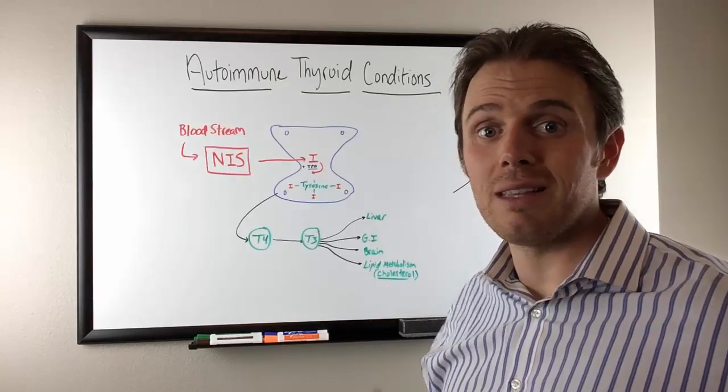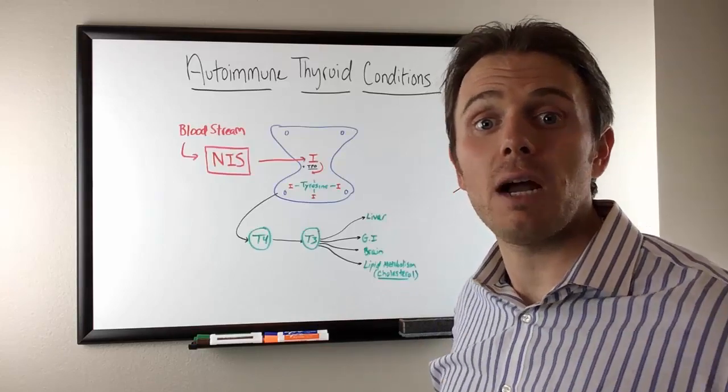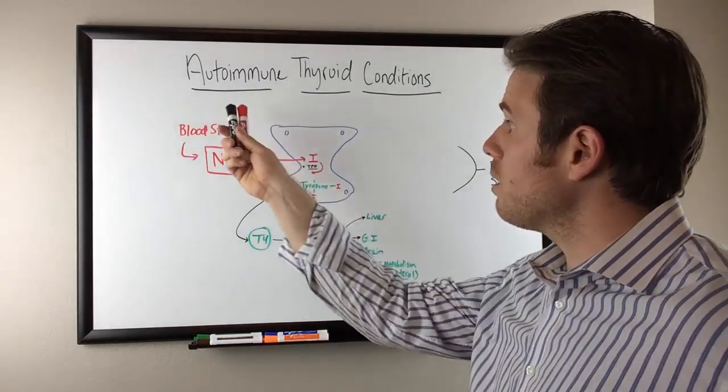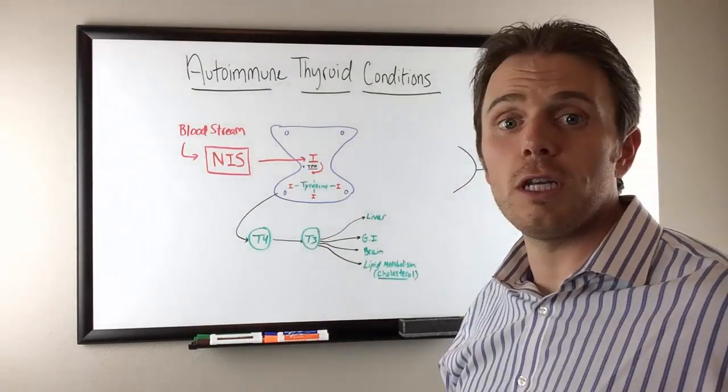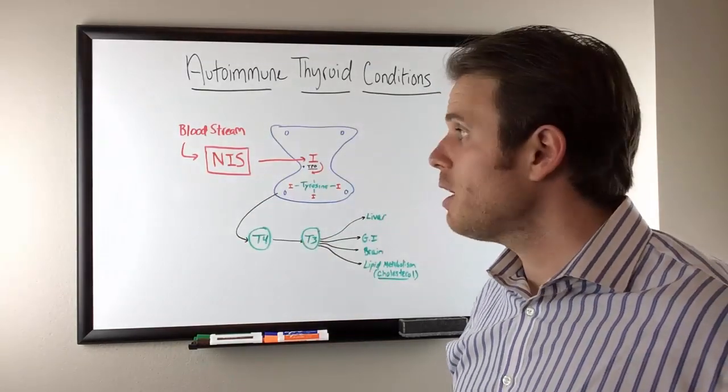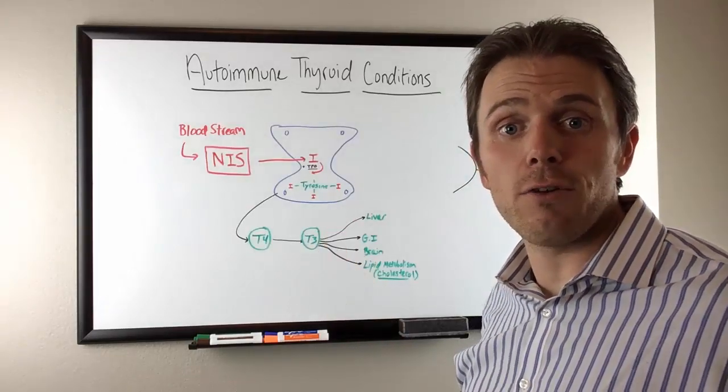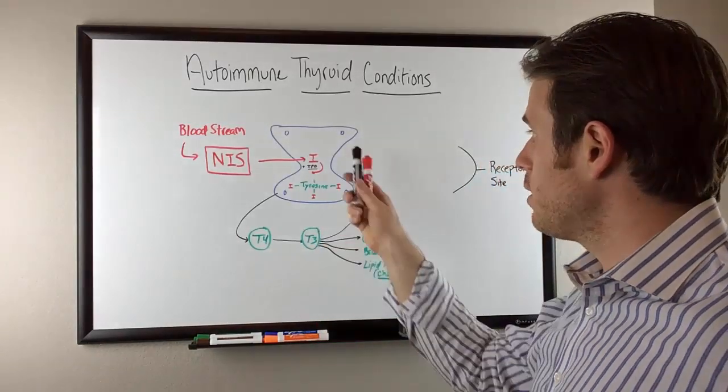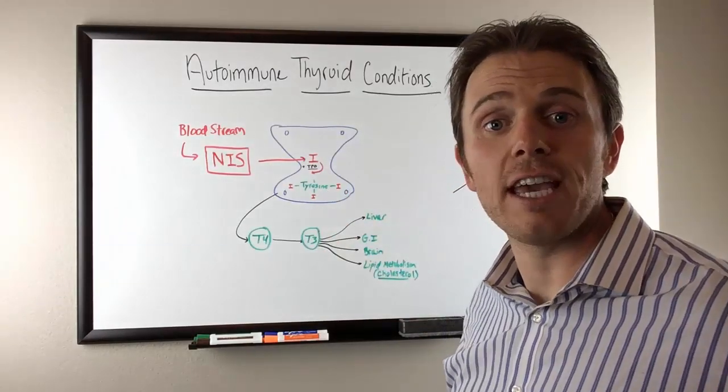The more thyroid tissue lost, the less thyroid hormone they'll be able to produce on their own and they may need thyroid replacement at some point. So let's take a look here. The autoimmune process begins essentially in the sodium iodine symporter system. This is where our body brings iodine into our thyroid gland. This process of taking iodine and binding it to tyrosine is called organification.